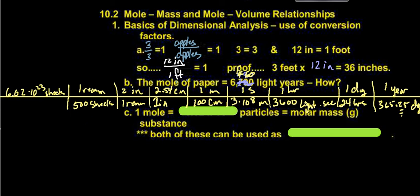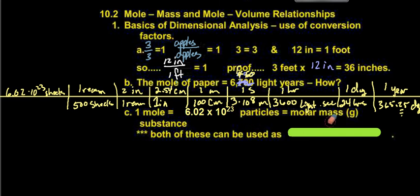We know that 1 mole equals 6.02 × 10²³ particles, and that equals the molar mass of a substance — that many particles of something is the atomic mass or the formula mass in grams of the substance. Both of these can be used as conversion factors. So we're going to start using them on the next page.